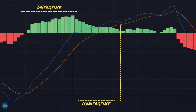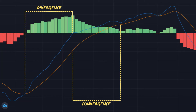Two important concepts to keep in mind are convergence, which occurs as the MACD line and signal line come closer together, and divergence, which occurs when the two lines separate further apart. The histogram also illustrates convergence as the bars shorten closer to the zero line, and divergence as the bars lengthen and become further away from the zero line.